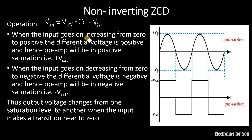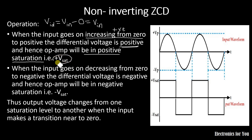When the input goes on increasing from zero — that is, when the input is positive — VID is positive, meaning the differential voltage is positive, and therefore the output will be in positive saturation. This is because it is an open-loop configuration, and in open-loop, the output is always either in positive saturation or negative saturation. Similarly, for a negative value, VID is negative and therefore the output goes into negative saturation.